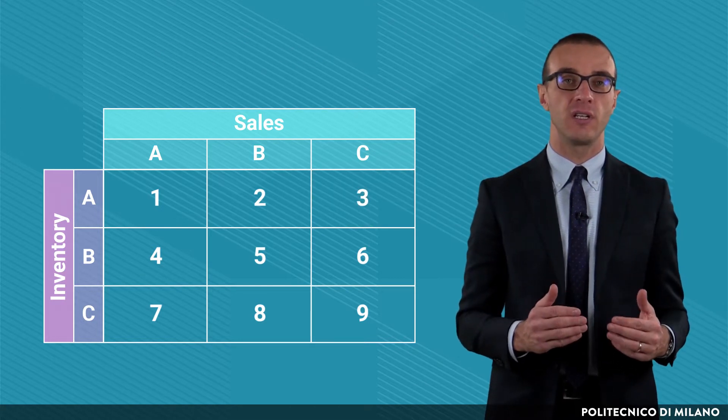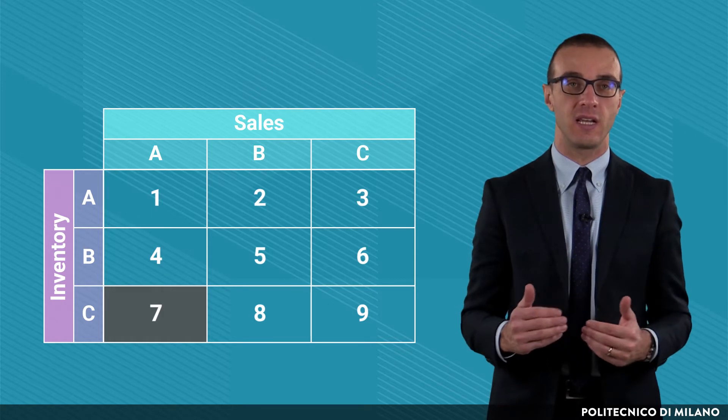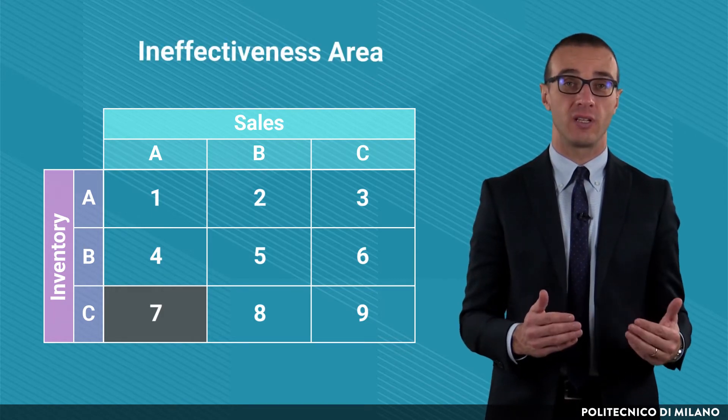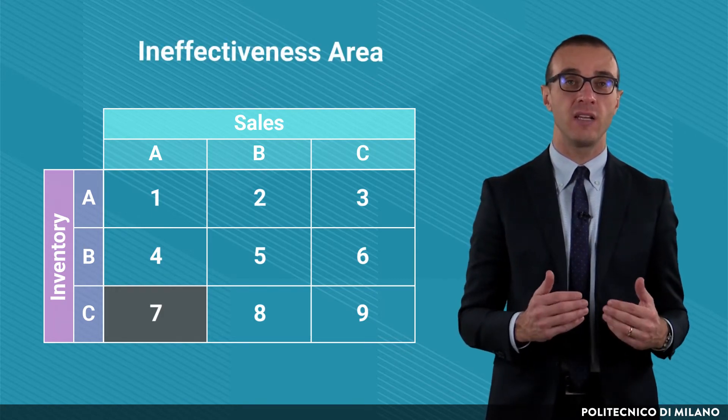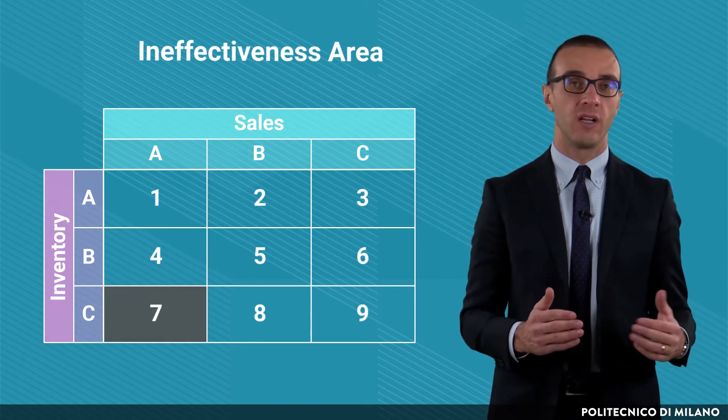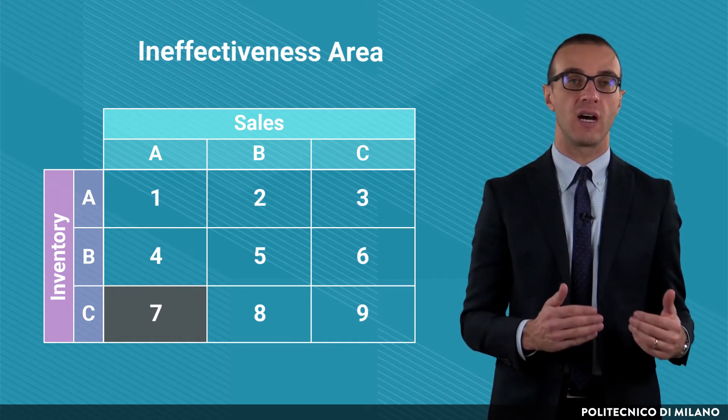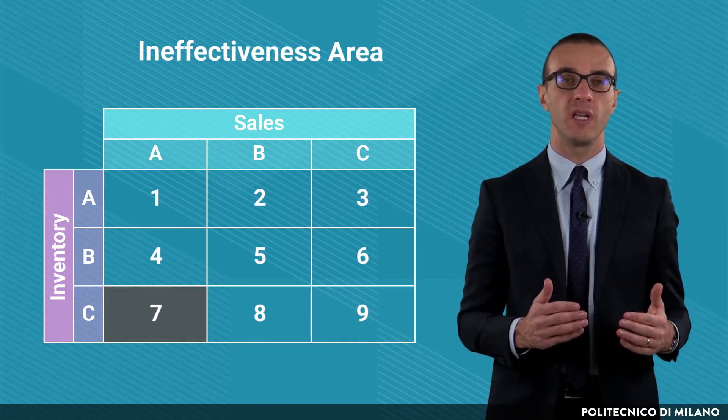Third, let's consider the AC items characterized by low inventories and high sales. It is a privileged class of items and represents a good example of inventory management. However, it can hide some risks. If the inventory level requirements are underestimated, there could be stockouts.